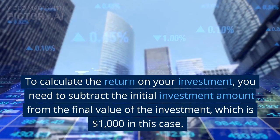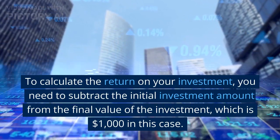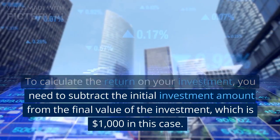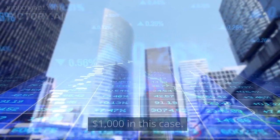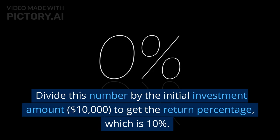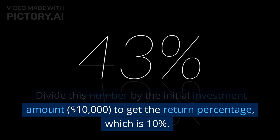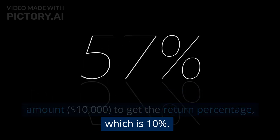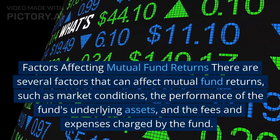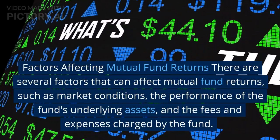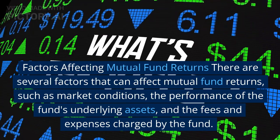To calculate the return on your investment, you need to subtract the initial investment amount from the final value of the investment, which is $1,000 in this case. Divide this number by the initial investment amount, $10,000, to get the return percentage, which is 10%.